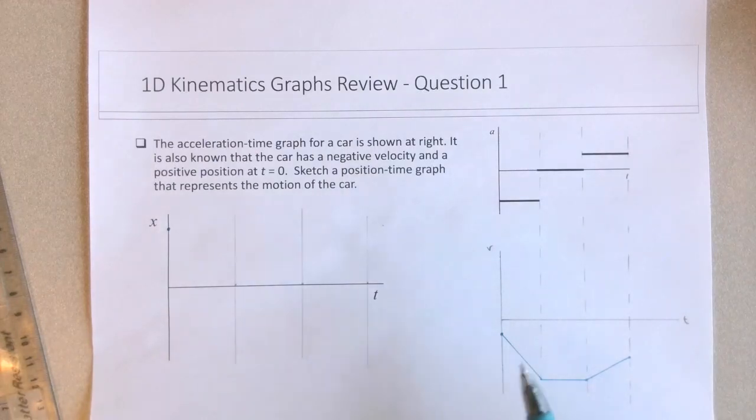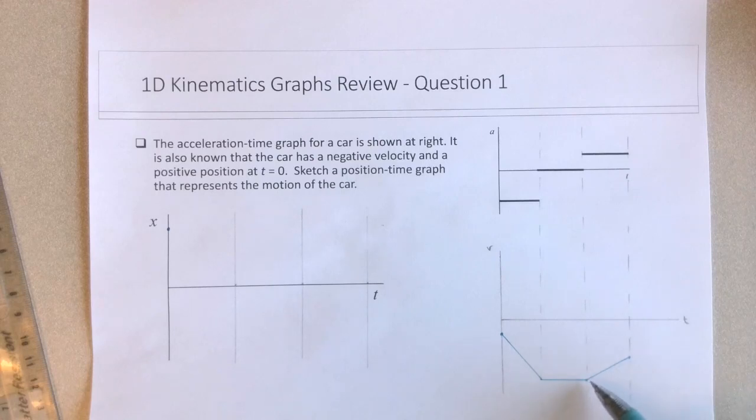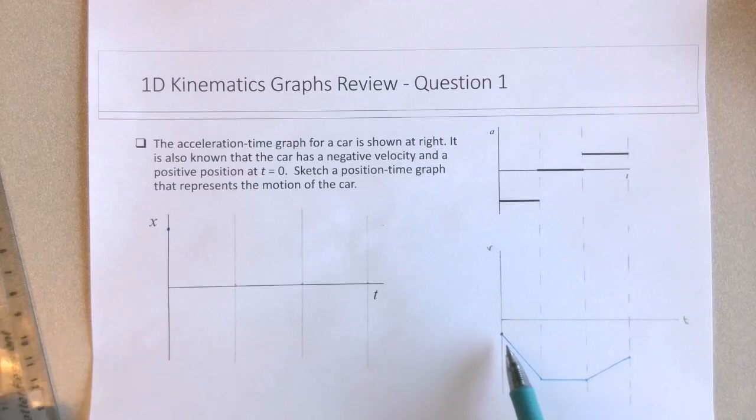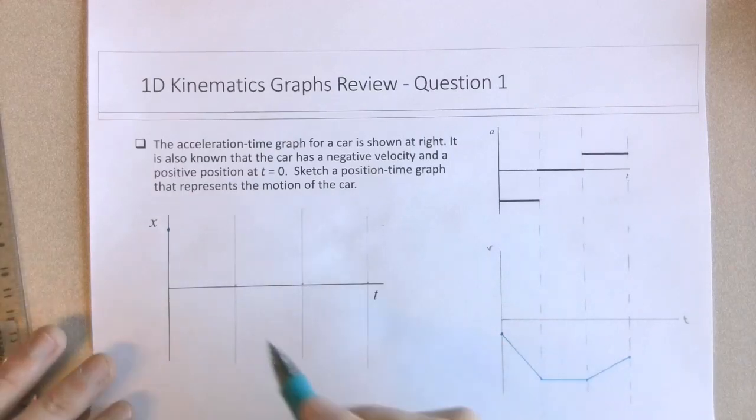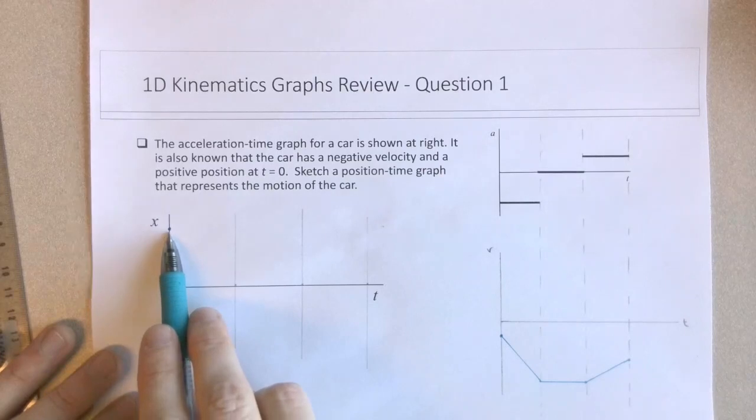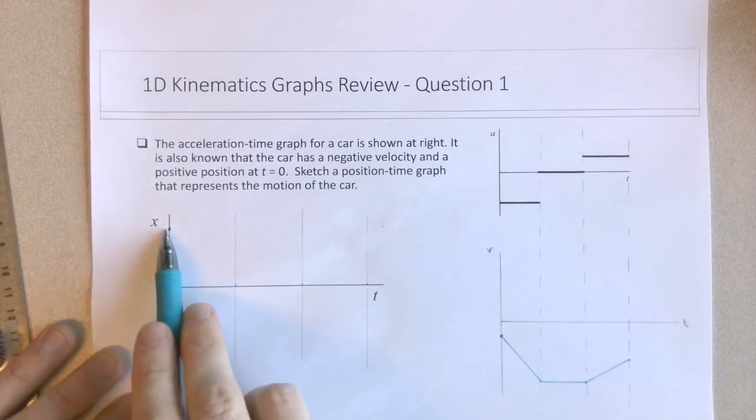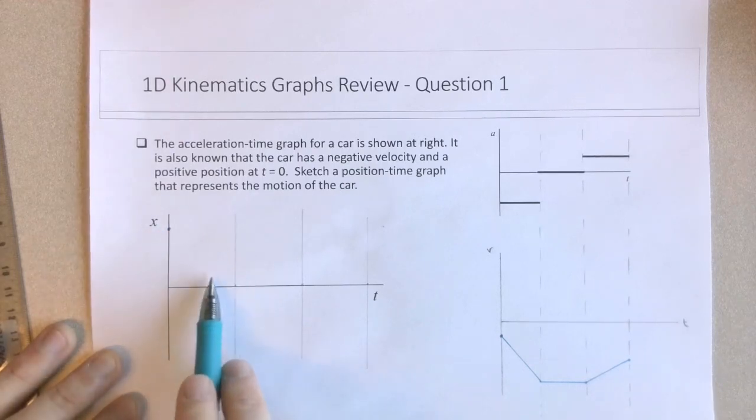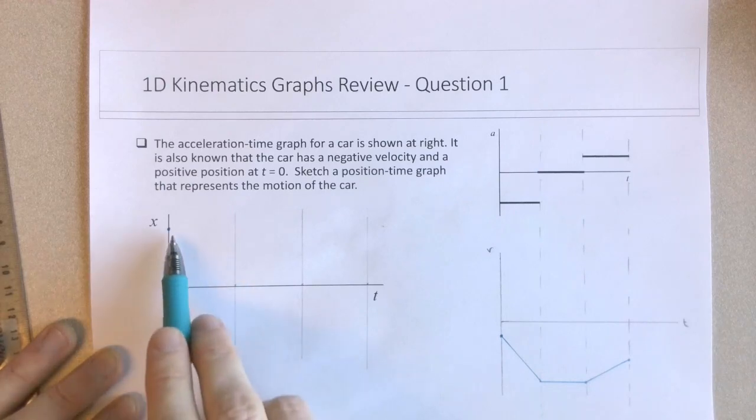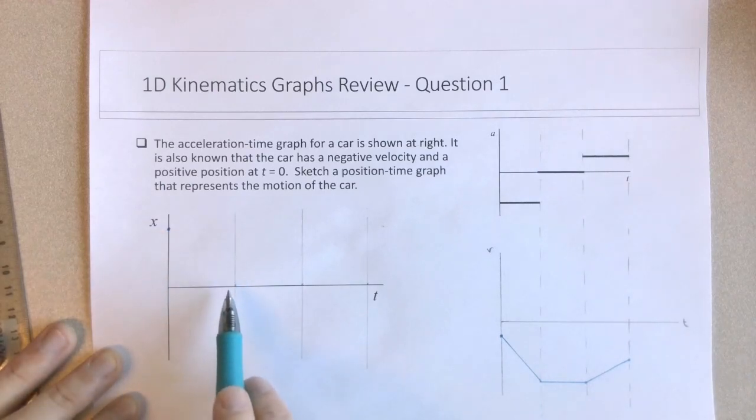And in this particular case, it starts with a negative velocity that gets more and more negative until it reaches a particular point here where it has a constant negative velocity, and then it slows down where the velocity is getting less and less negative.